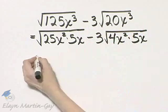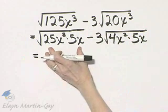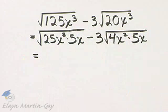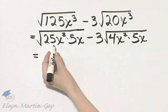Notice I haven't changed anything. If you multiply these two factors, you still get 125x cubed, but now I'm ready to simplify.